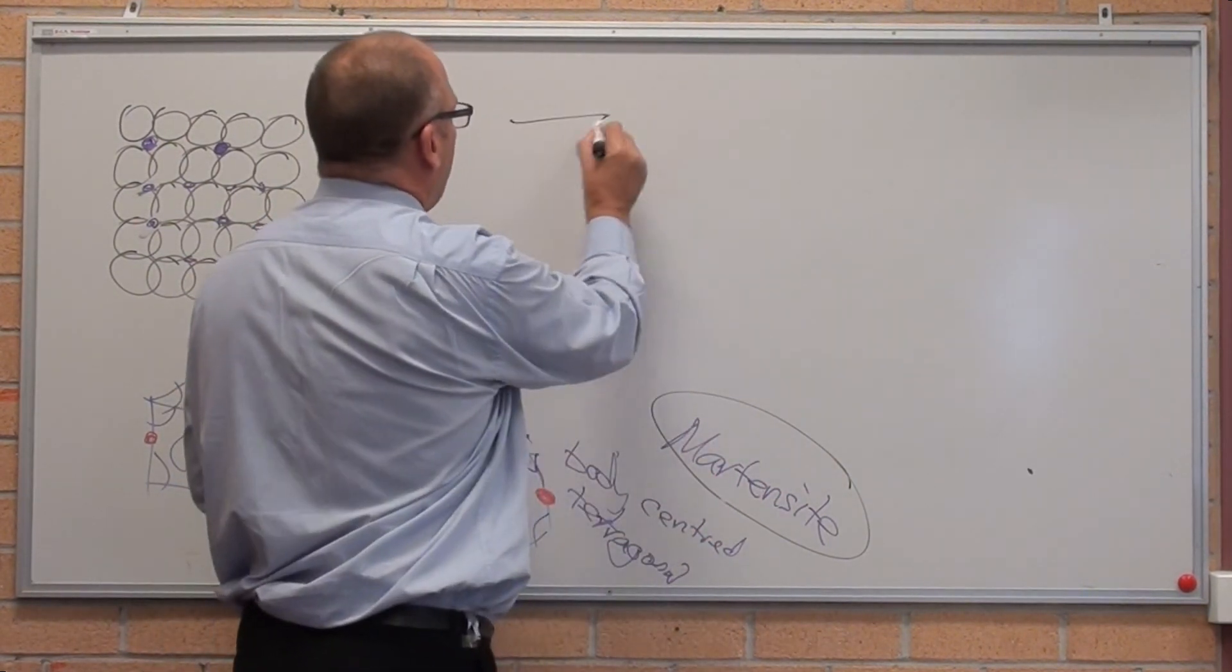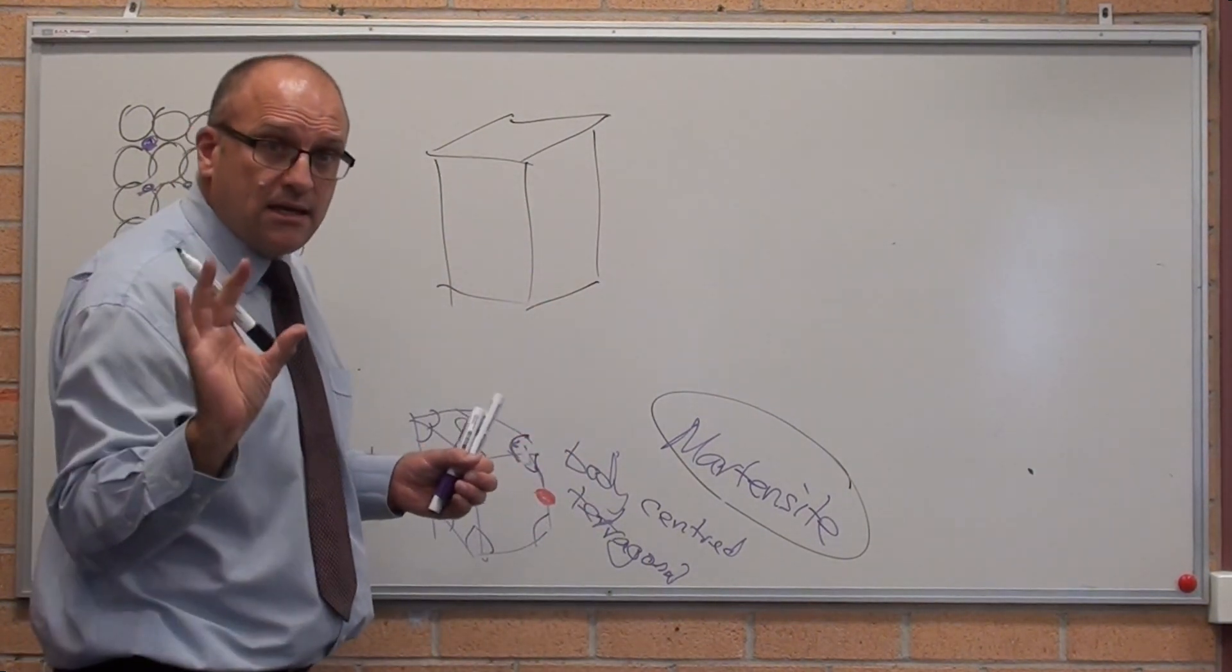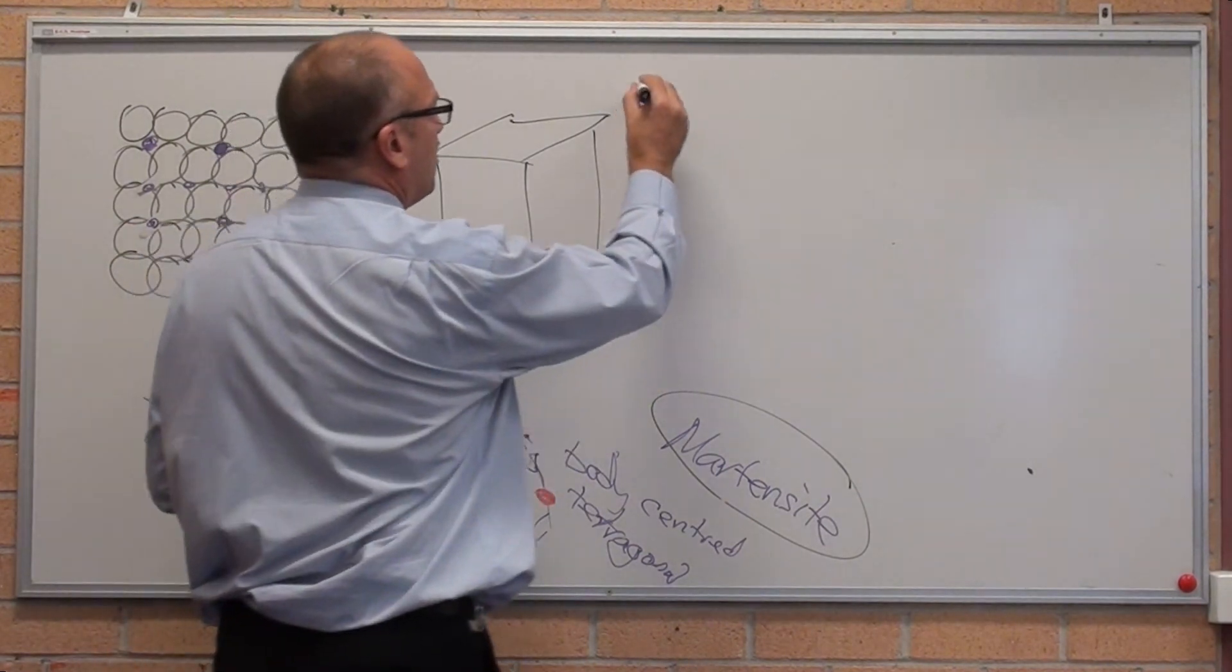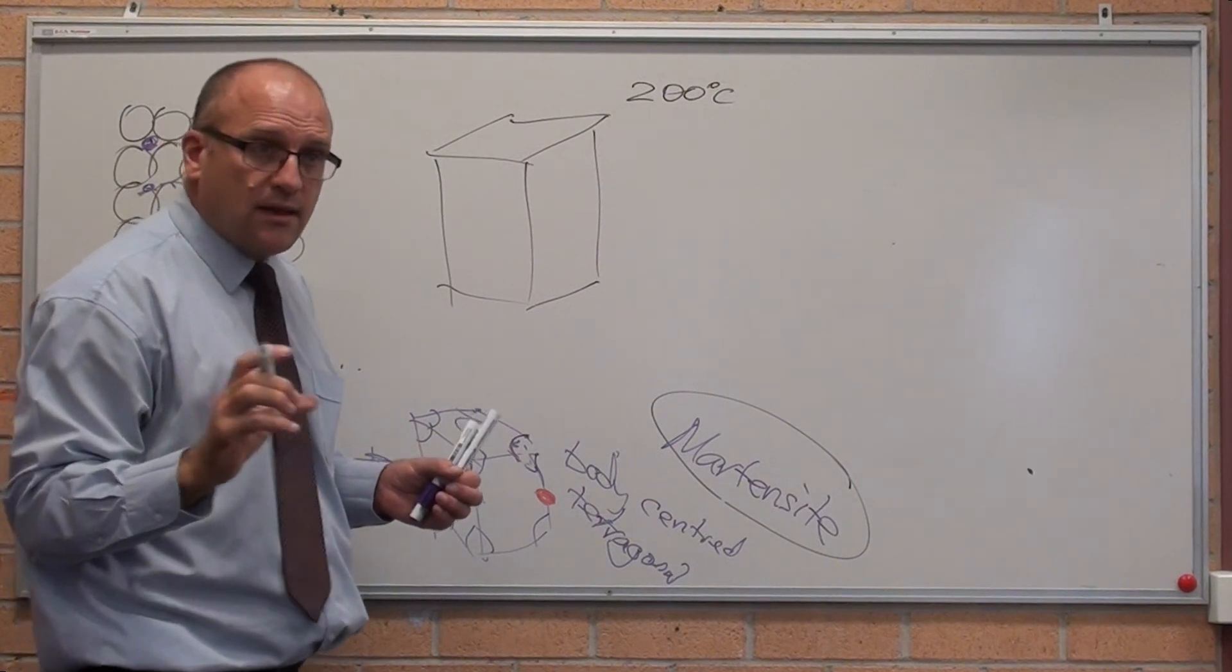So we've got that body-centred tetragonal. If I put heat into that, just a little bit, like 200 degrees. If I put 200 degrees of heat into that, just a tiny amount of heat.